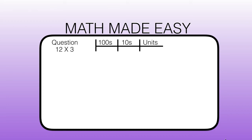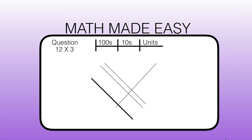So from the top left we are going to draw one thick line to represent how many tens there are in 12, then 2 thinner lines to represent 2 units. Then from the top right we will draw 3 thinner lines to represent the 3 units. We are going to draw a circle around the area where the thin lines meet thin lines to count our units.